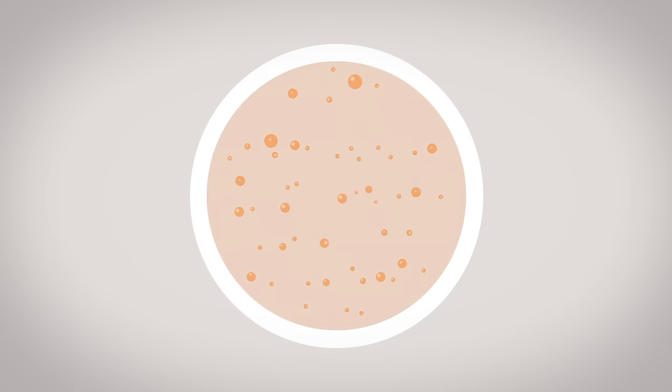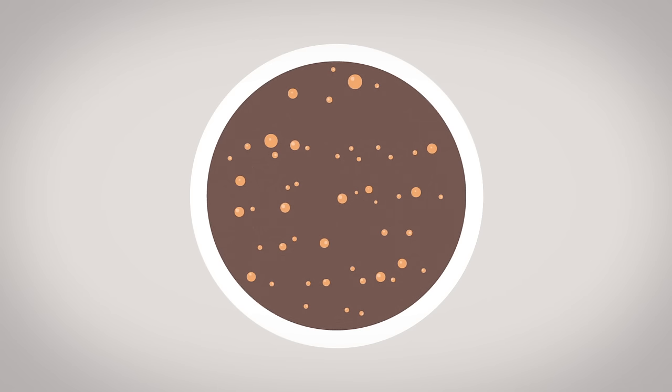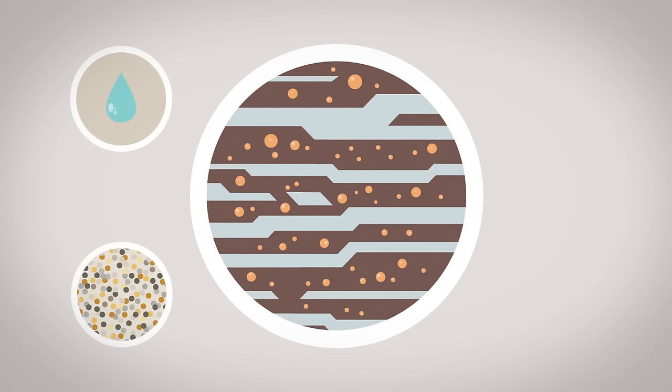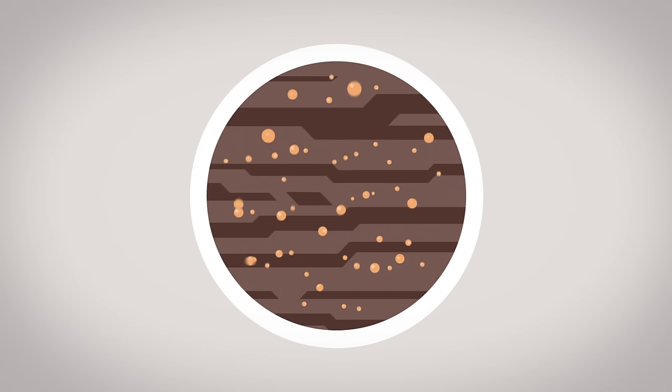Put simply, fracking describes the recovery of natural gas from deep layers inside the earth. In this method, porous rock is fractured by the use of water, sand and chemicals in order to release the enclosed natural gas.